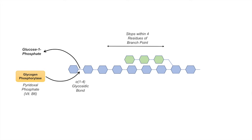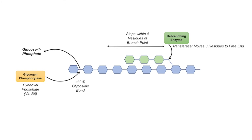Glycogen phosphorylase cannot keep removing residues off of a glycogen branch, so the cell continues to metabolize glycogen by utilizing another enzyme: the de-branching enzyme. The de-branching enzyme has a couple of functions. One, it acts as a transferase — it will move three residues from one branch and move them to the free end of another branch, which helps to reduce the steric hindrance on the glycogen phosphorylase.